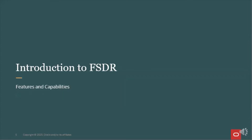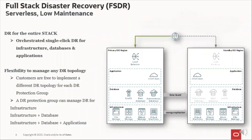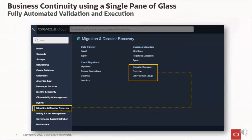Now let's see some of the features and capabilities of FSDR. FSDR is an orchestrated single-click DR for infrastructure, databases, and applications — it covers the entire stack. However, you have the flexibility to implement the DR topology for only infrastructure, or for infrastructure plus database, or for infrastructure plus database plus application. Importantly, the DR management solution is not for provisioning or configuration of DR — FSDR only orchestrates on top of the existing DR solution for better, quicker, and easier manageability. You can access Full Stack Disaster Recovery through the OCI cloud console.